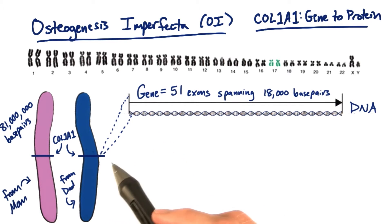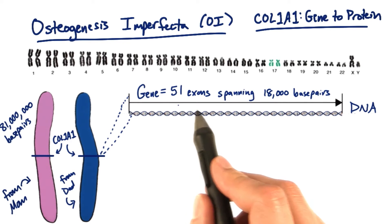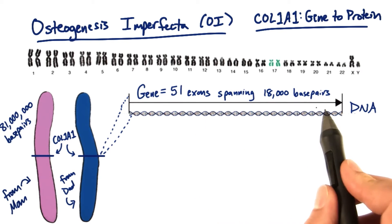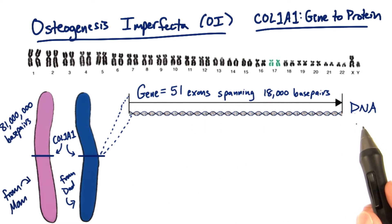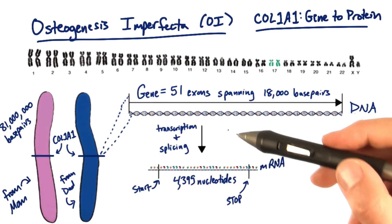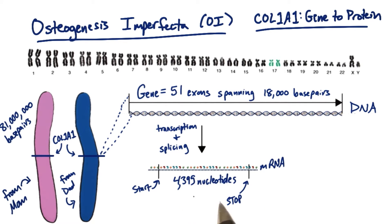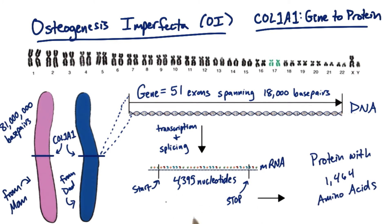The Col1A1 gene spans 51 exons and over 18,000 base pairs of DNA. After transcription and splicing, the mRNA has 4,395 nucleotides of coding region between the start and stop codons. And after translation, we get a protein with 1,464 amino acids.